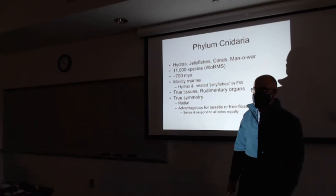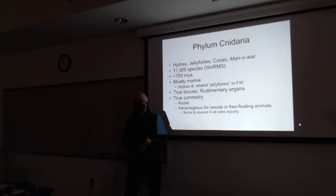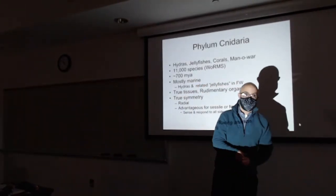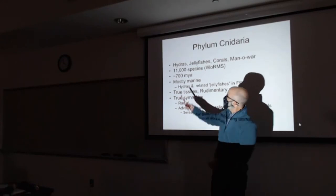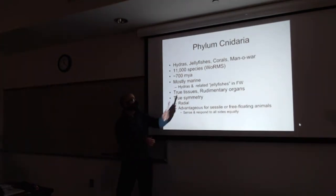I think we said with the sponges, they were maybe 5,000 or 8,000 species. How many species of animals are there just for context? I'm not really interested in you guys memorizing a whole bunch of stuff that you're going to forget, but I'd like for you to have some kind of general perspective. Is 11,000 a lot of species?